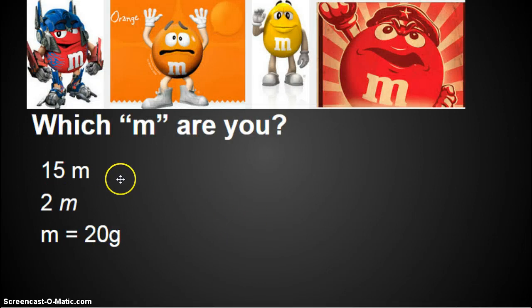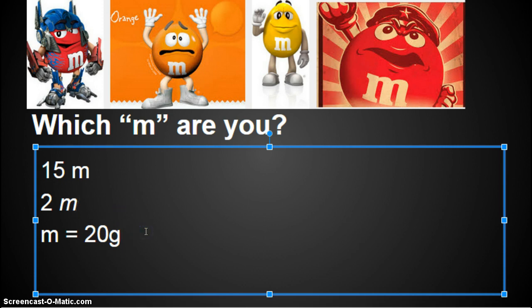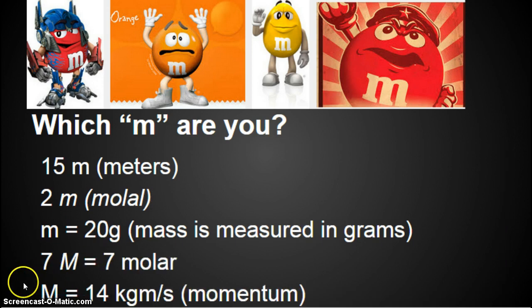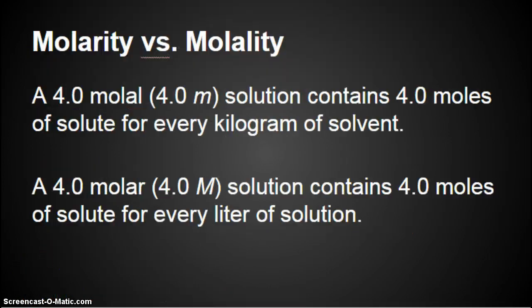Which m are you? There's a lot of m's in science. So I could have 15m, 15m italicized, or m equals 20g. Any idea what any of these stand for? So regular m is meters, that's distance. Italicized lowercase m is molal, that's what we're working on in this unit, specifically in this lesson. And then m equals 20g stands for mass, measured in grams. So m as a variable is mass, m as a unit is meters, m as an italicized letter is molal. And there's also capital M's. That's right. Capital M stands for momentum. Capital italicized M is molar.